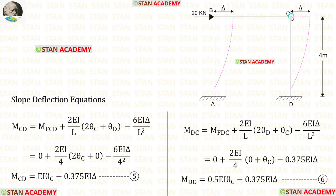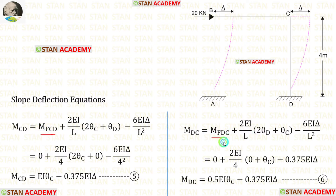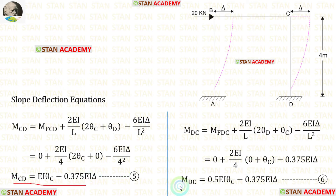Now let us make the slope deflection equations for column CD. Column CD is subjected to sway, so in the equations we have to add the moments due to sway. The fixed end moments are zero and the length of CD is 4. At point D there is a fixed support, so there will be no slope — θD will be zero. Finally, in column CD we have made two equations.